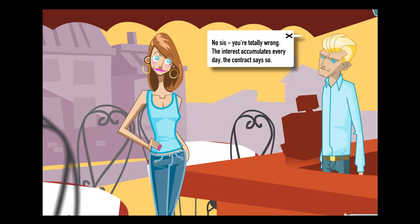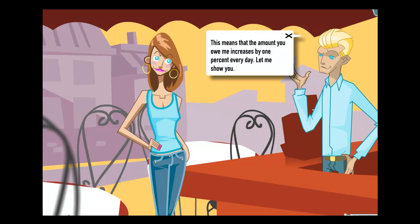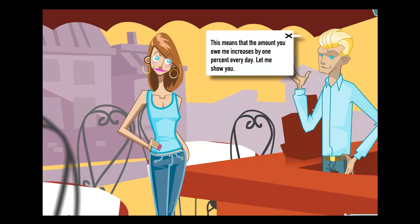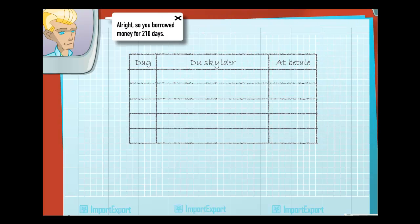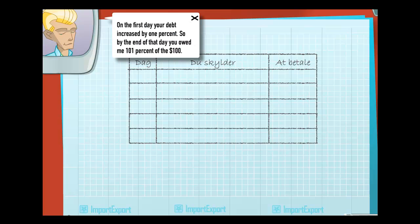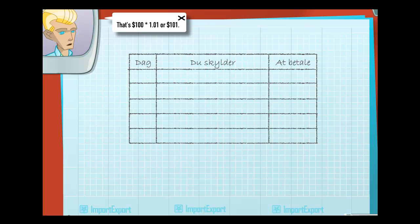No, sis. You're totally wrong. The interest accumulates every day. The contract says so. This means that the amount you owe me increases by 1% every day. Let me show you. I'll just draw a table. Alright. So you borrowed money for 210 days. On the first day, your debt increased by 1%. So by the end of that day, you owed me 101% of the $100. That's $100 times 1.01, or $101.